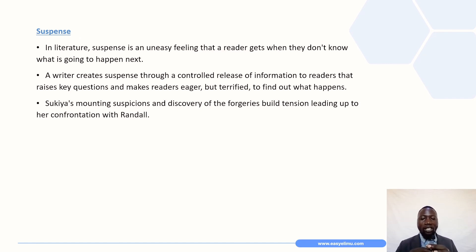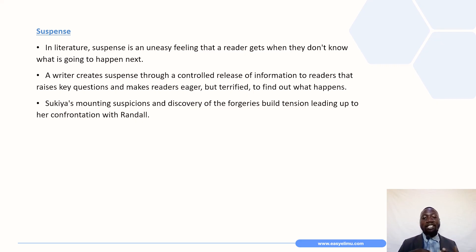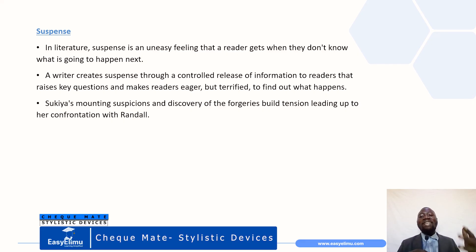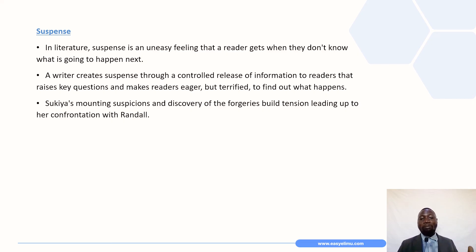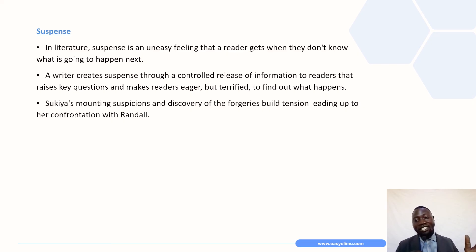The last stylistic device is suspense. In literature, suspense is an uneasy feeling that a reader gets when they don't know what is going to happen next. A writer creates suspense through a controlled release of information to readers that raises key questions and makes readers eager but terrified to find out what happens. In the story, Sukiya's mounting suspicions and discovery of the forgeries build tension leading up to her confrontation with Randall. At this point, we are not really sure of the next series of events — all we know is that Sukiya has discovered the discrepancies, but who is going to checkmate whom, as the title suggests?